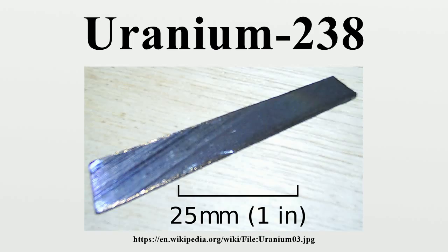Ducrete, a concrete made with uranium dioxide aggregate instead of gravel, is being investigated as a material for dry cask storage systems to store radioactive waste. Downblending: The opposite of enriching is downblending. Surplus highly enriched uranium can be downblended with depleted uranium or natural uranium to turn it into low-enriched uranium suitable for use in commercial nuclear fuel.